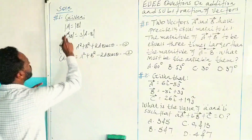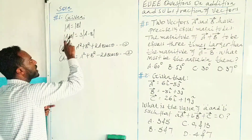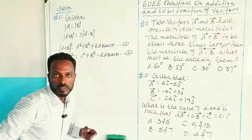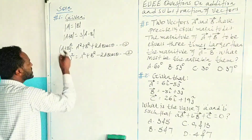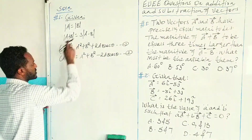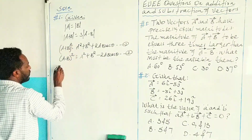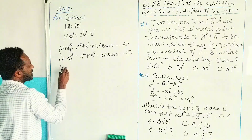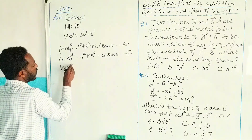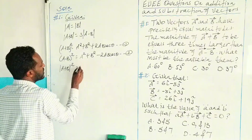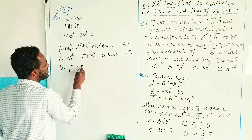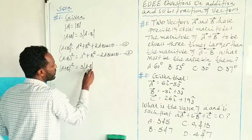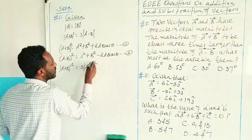Magnitude of A and B is the same, and magnitude of A plus B is 3 times larger than magnitude of A minus B. Which means that magnitude of A plus B, the whole square, is the same as 3 times A minus B, the whole square.